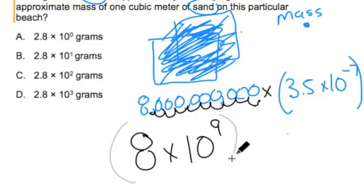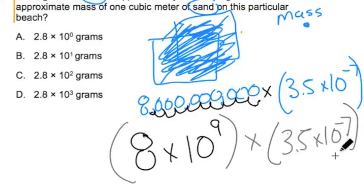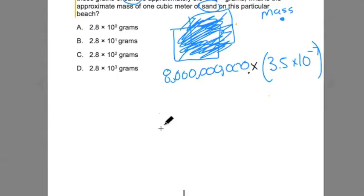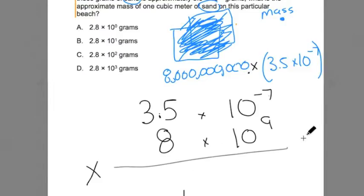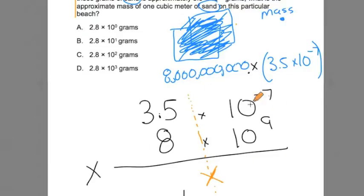So this is 8 billion grains of sand, and I'm going to multiply it by 3.5 times 10 to the negative 7th. To do this, I'm going to set up a math problem where I multiply these two out. I'll put 3.5 times 10 to the negative 7th, and multiply that by 8 times 10 to the 9th. This is going to be a dual multiplication problem. I'm going to draw a little line so we don't mix these up — multiply this side out, multiply that side out, then multiply those answers together. That will give us the final product.